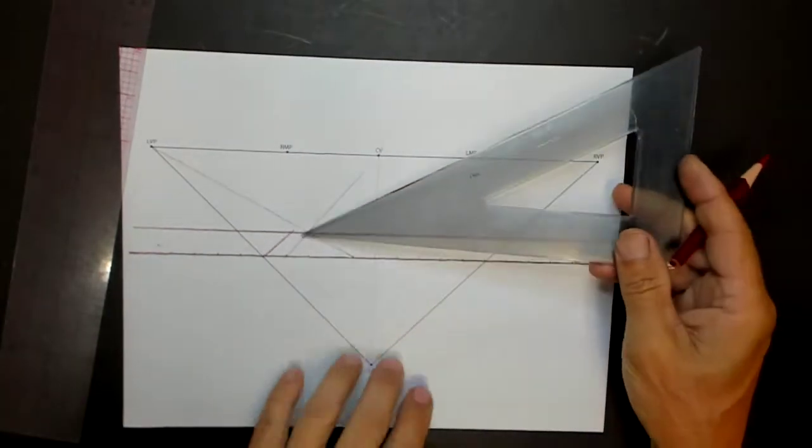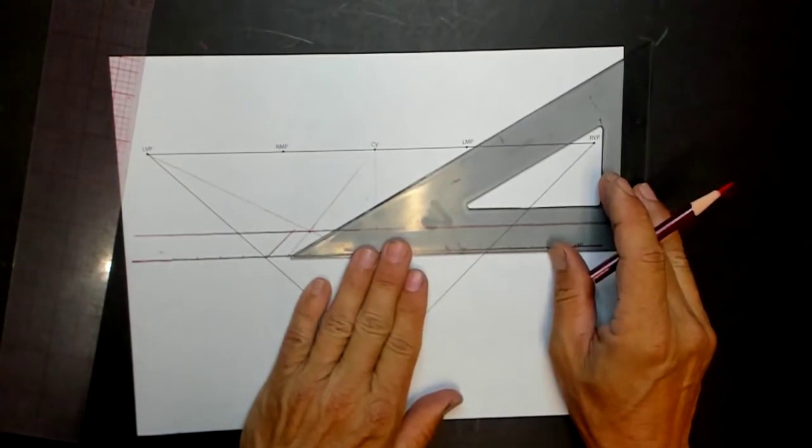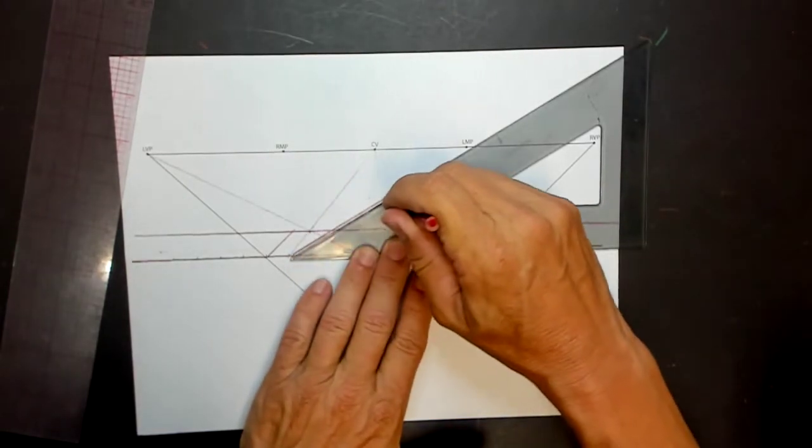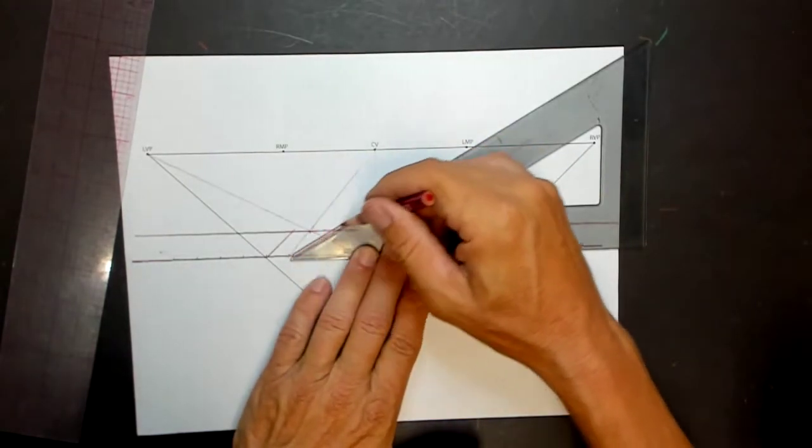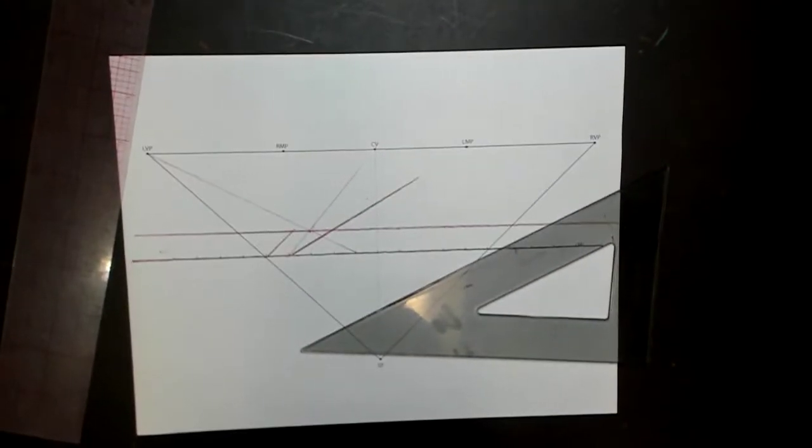And here is a 30-degree incline. There's no vanishing points to this because things that are parallel to the picture plane don't have vanishing points.